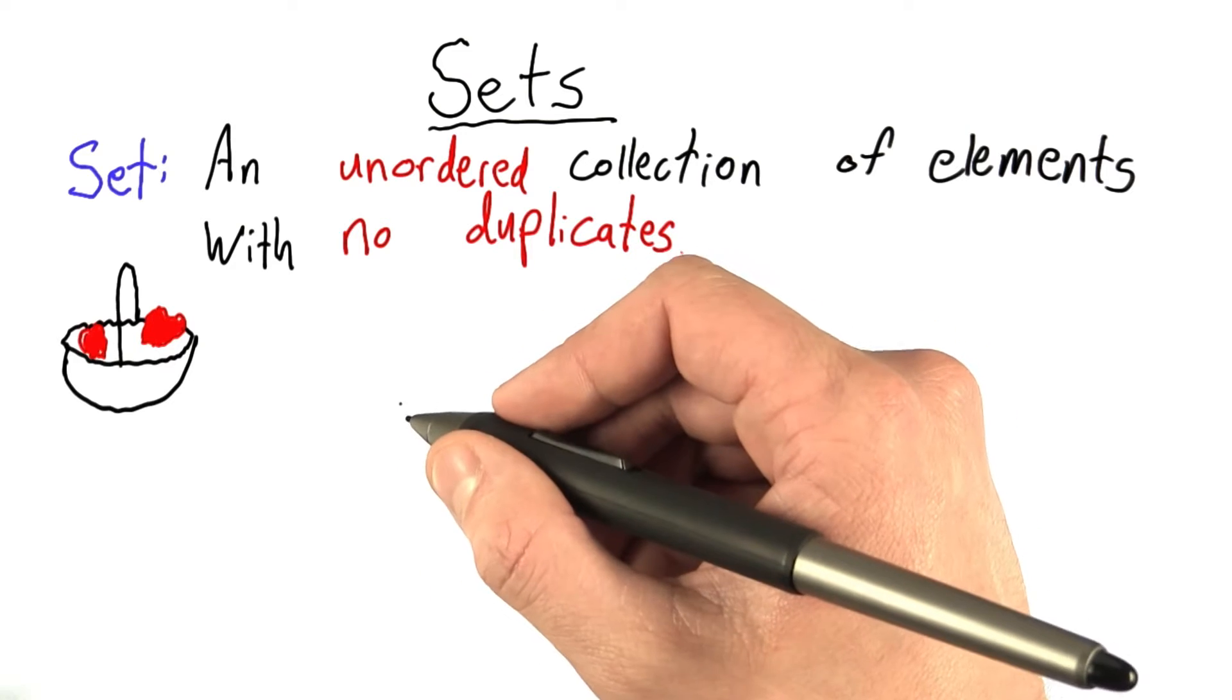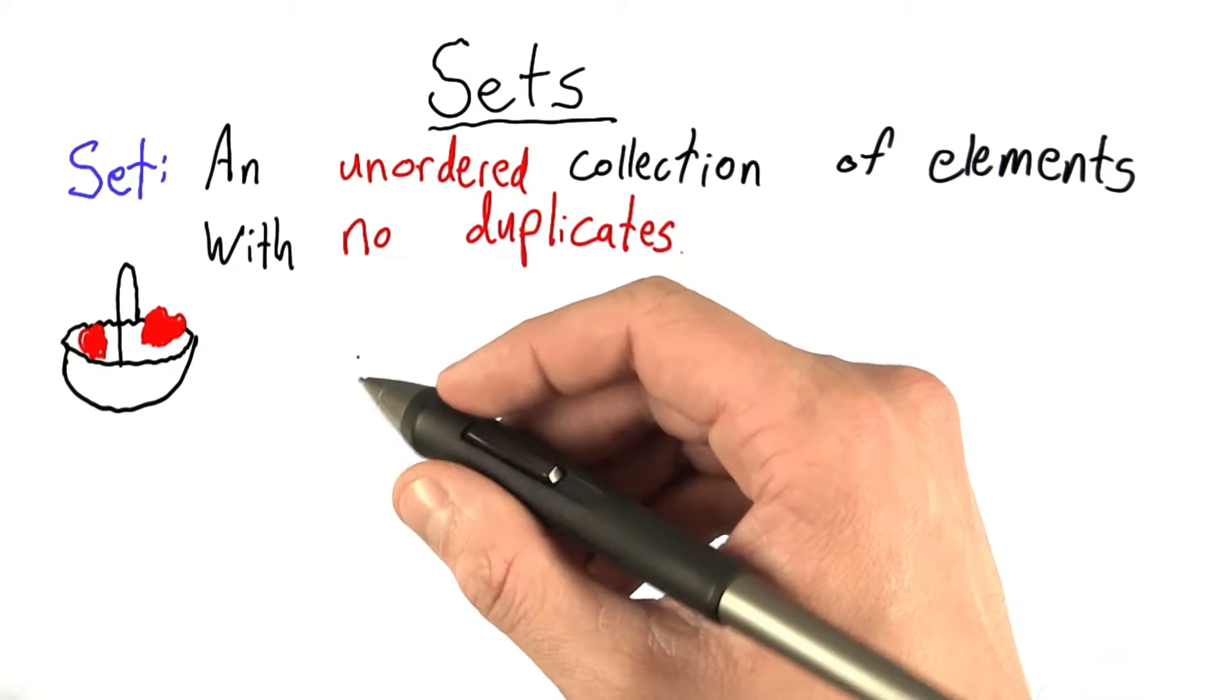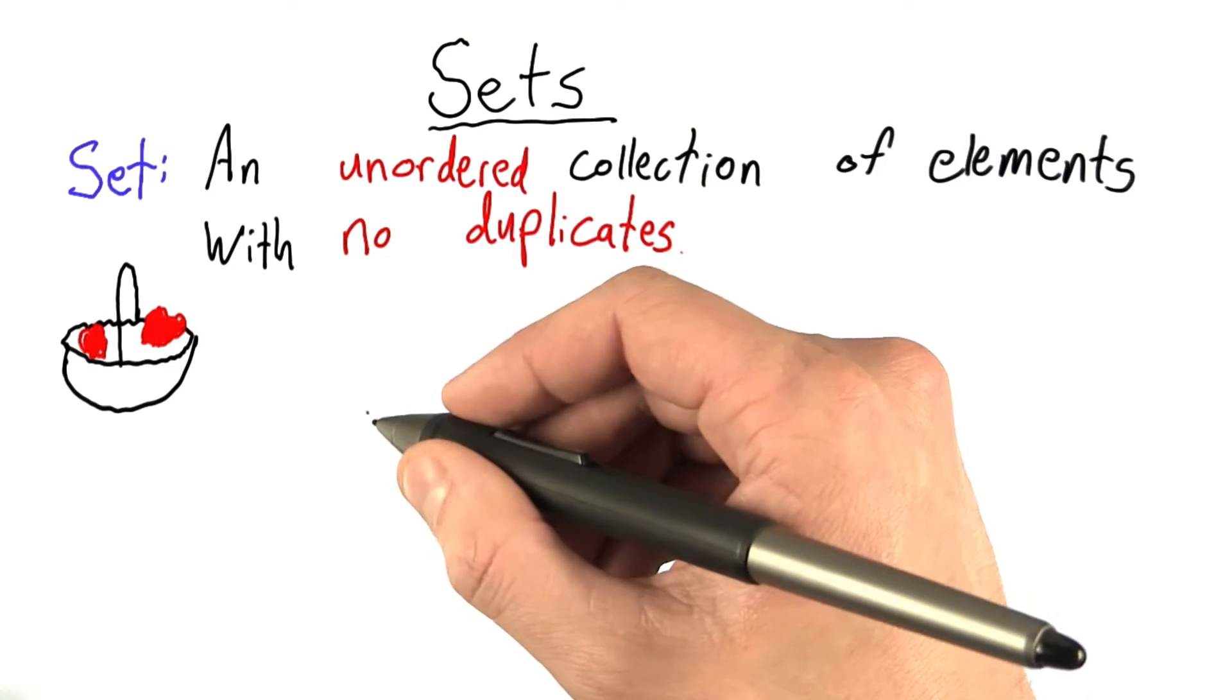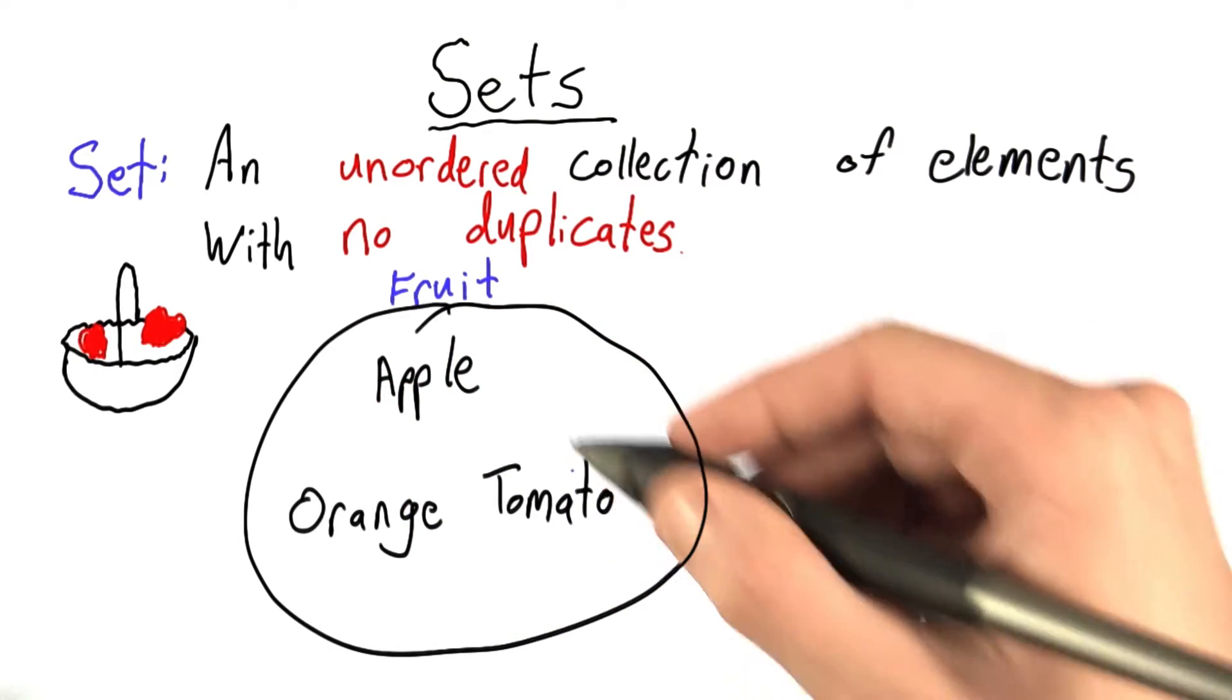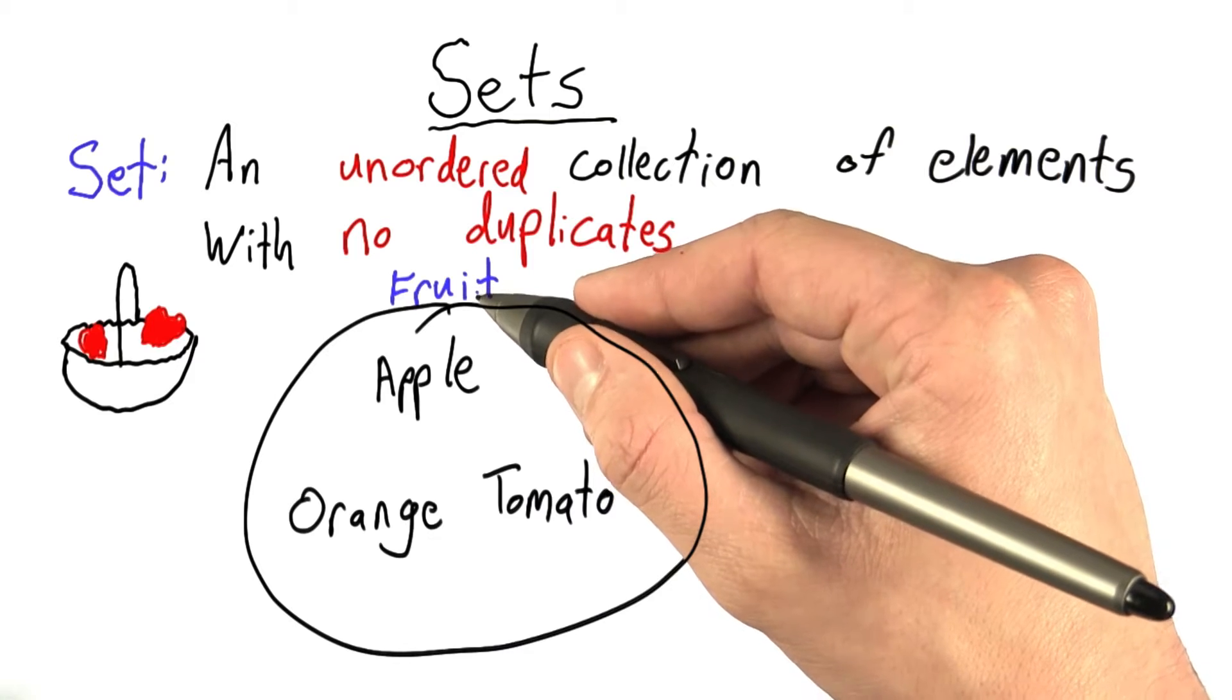If we want to represent this as a set, we wouldn't care about this quantity, so the fact that there's five apples doesn't matter. In fact, I could just write apple, orange, and tomato, and label this set fruit.